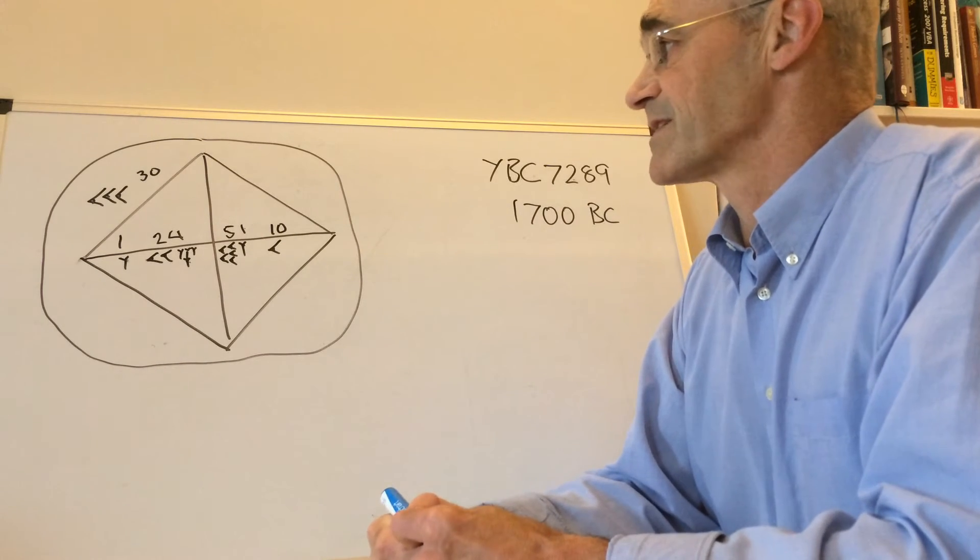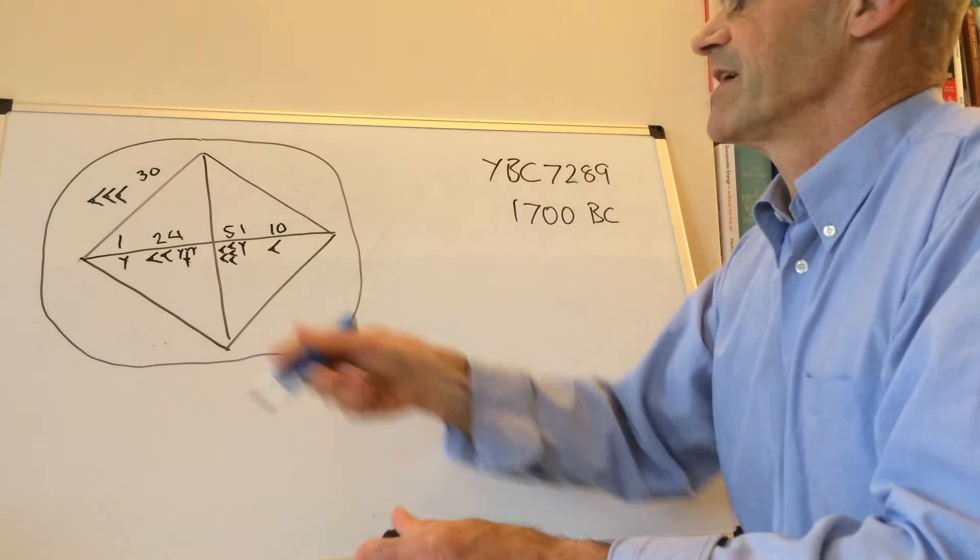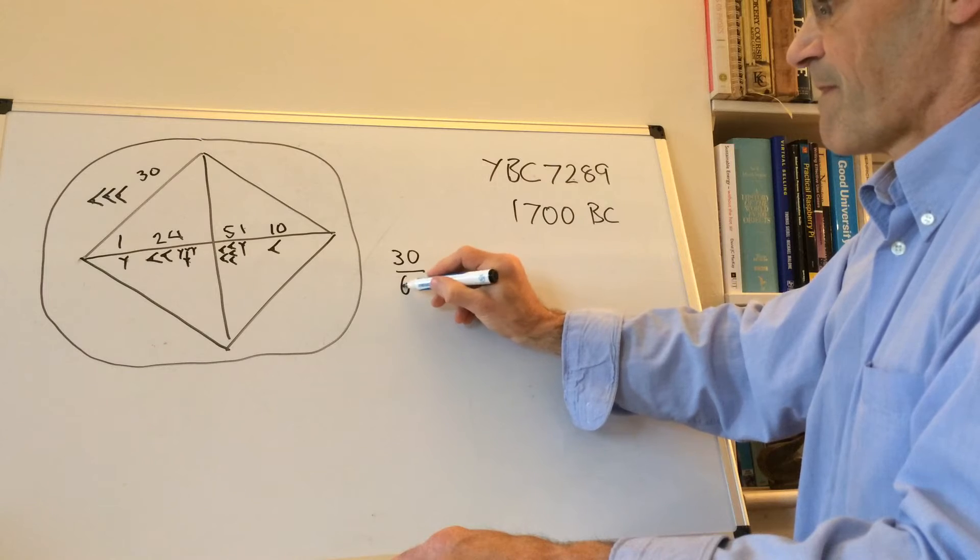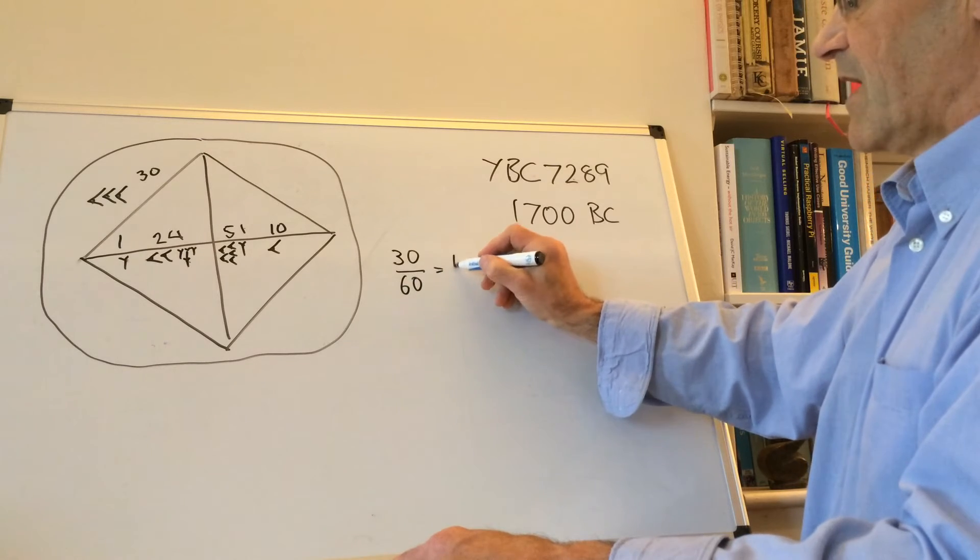But let's make the assumption that that 30 there represents 30/60, which is equal to a half.